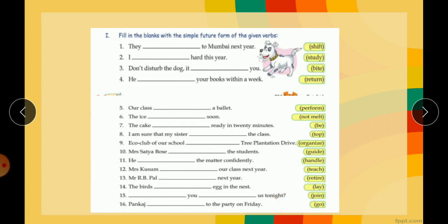Next one is will you join us tonight. Now it's an interrogative sentence, so the helping verb will come first. Will you and the first form of the verb join. Pankaj will go to the party on Friday. It's a very simple exercise. You just have to put will or shall and the first form of the verb that are given here.